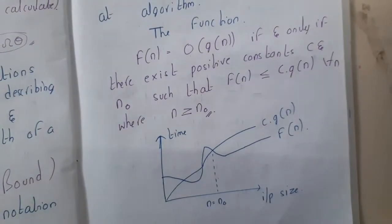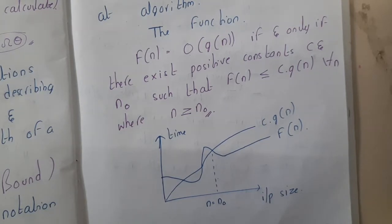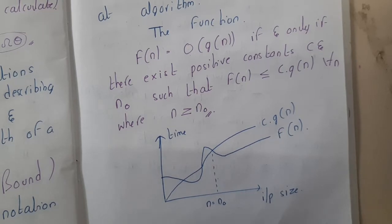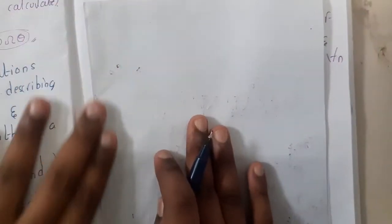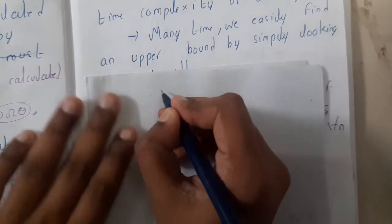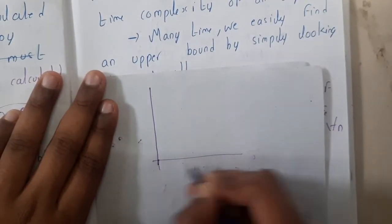As we go through the types of asymptotic notations you will get a clear idea, so don't get scared. Let us start by understanding some basic things first, with respect to a graph.